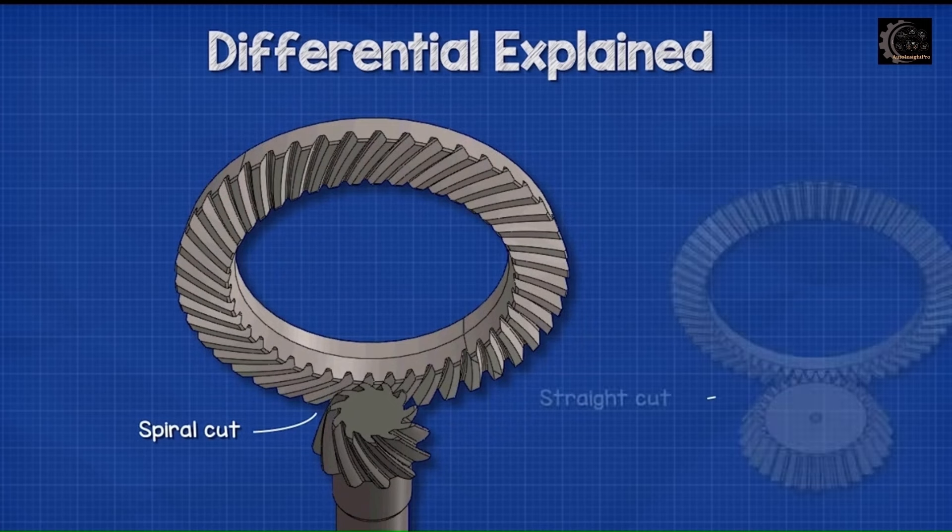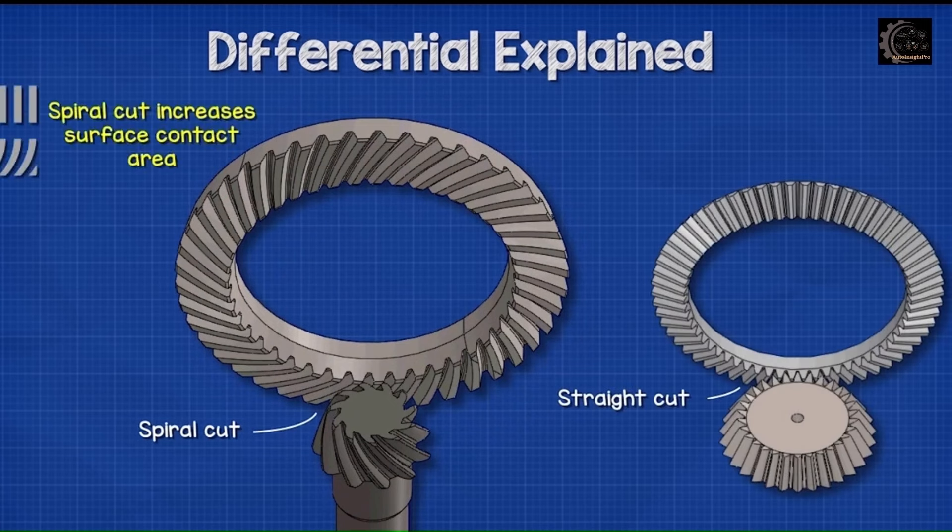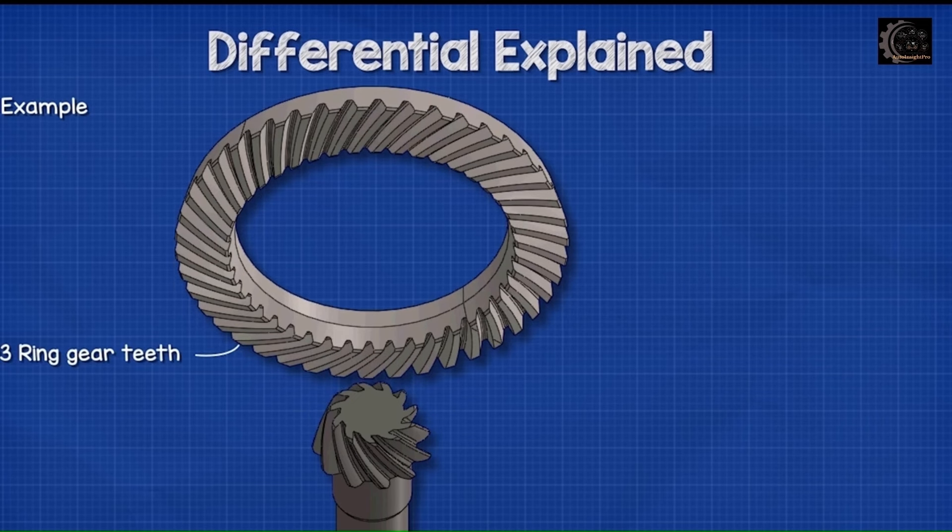Notice the gears are spiral cut. They could be straight cut, but a spiral cut increases the contact surface area. In this example, we have 43 ring teeth and 11 pinion teeth, and so the ratio is about 3.9 to 1.